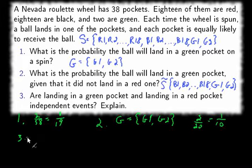Number three, are landing in a green pocket and landing in a red pocket independent events? Well, from number one, here's what we know so far. We know that the probability of getting a green pocket is 1 over 19. Now, if we could calculate probability of getting a green pocket given red pocket, then we could compare the two and have an answer.